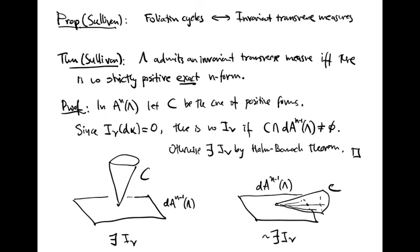The proof is very easy. In the space of leafwise N-forms, let C denote the cone of positive forms. Since I_nu of an exact form must equal zero, but I_nu is positive on a positive form, there can be no invariant transverse measure if there is a positive exact form. On the other hand, the cone of positive forms, being a cone, is convex. Therefore, if the cone of positive forms does not intersect the space of exact forms, by the Hahn-Banach theorem, we can find a linear functional which vanishes on the exact forms and is positive on the cone of positive forms. Such a linear functional is a foliation cycle, and therefore there exists an invariant transverse measure.